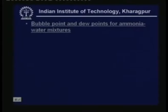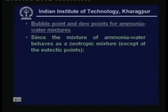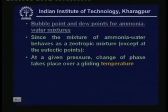Now let us introduce the important concept of bubble point and dew points for ammonia water mixers. This discussion holds good for any binary mixer which is a zeotropic mixer. Since ammonia water behaves as a zeotropic mixer (except at eutectic points where it behaves as an azeotropic mixer), at a given pressure, change of phase takes place over a gliding temperature — not at a constant temperature as it would for a pure fluid or azeotropic mixer. This is the nature of zeotropic mixers.